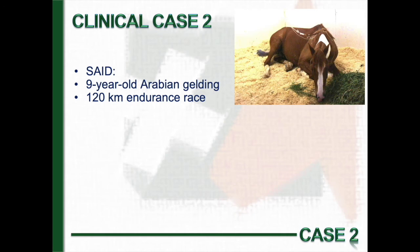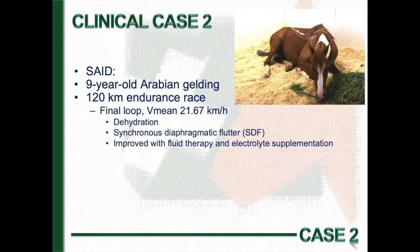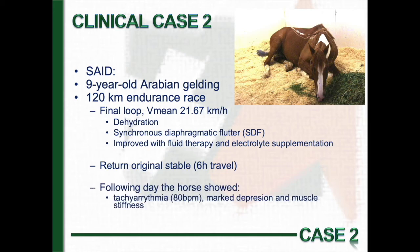The second case is a male nine-year-old Arabian horse, called Said, presented 24 hours after finishing a 120km endurance race at very high speed. After the event, the horse was dehydrated and had chronic diaphragmatic flutter that improved with fluid therapy. After this initial treatment, the animal was transported back to his stable and the following day, the horse was markedly depressed and had tachypnea and muscle pain on palpation.